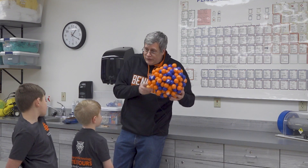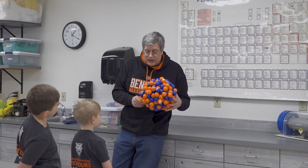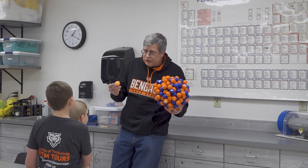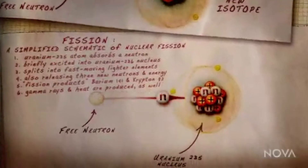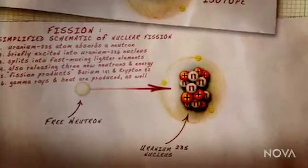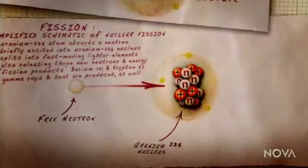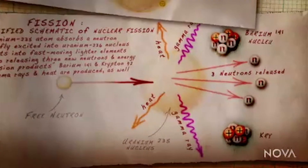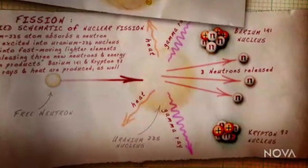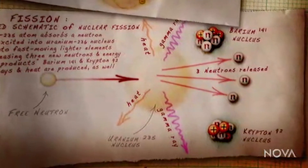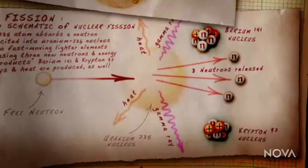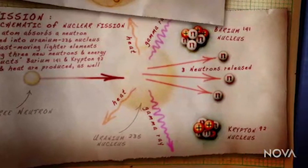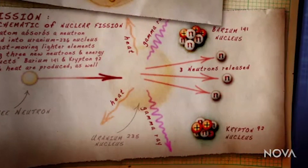This is a uranium nucleus, or a representation of it. Sometimes when we shoot a neutron at it, the neutron comes in and the nucleus starts to rearrange. It rearranges enough that instead of maintaining its structure, it fissions — it breaks in half.